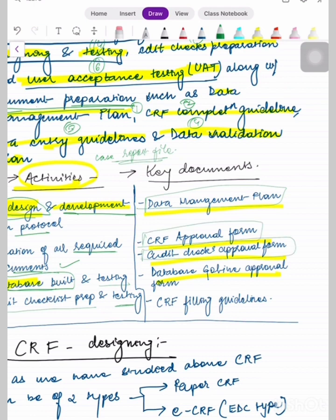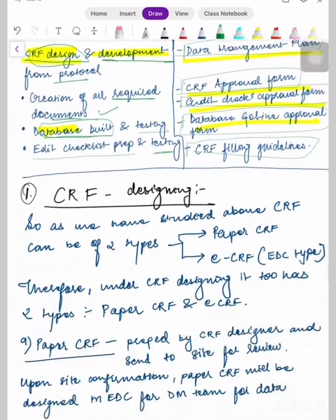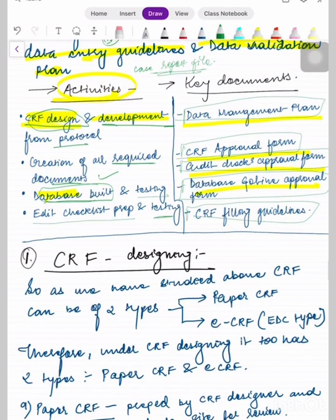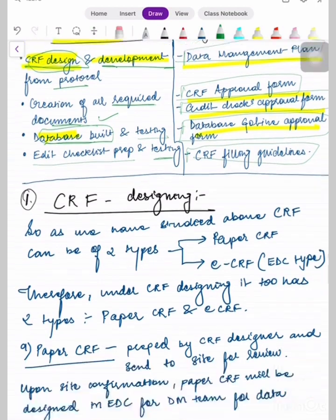The key documents prepared in the startup phase are: Data Management Plan, CRF approval form, edit checks approval form, database approval form, and CRF filing guidelines.